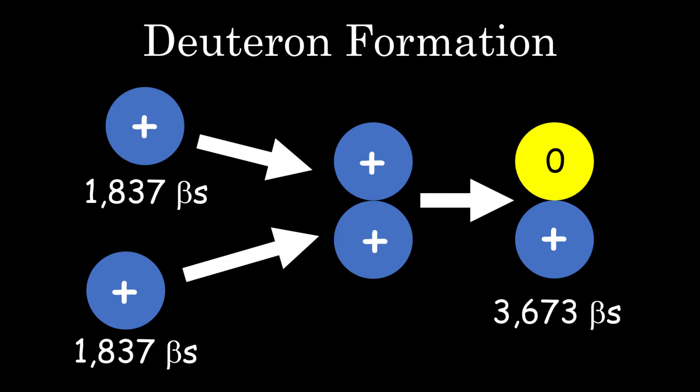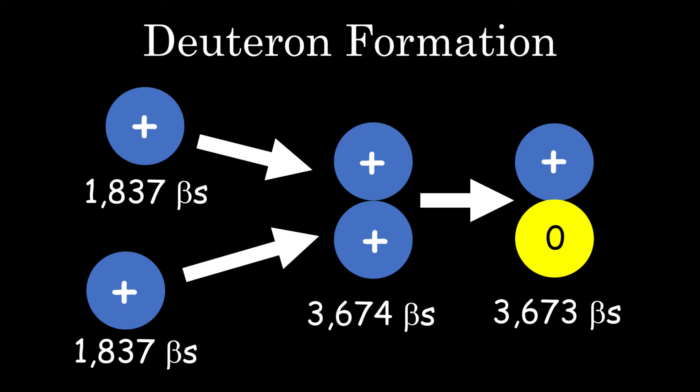Since the starting two protons, each having a plus one charge and containing 1,837 beta particles — 919 beta positrons and 918 beta electrons — together contain 3,674 beta particles and a plus two charge, one beta particle, a beta positron, is lost in forming the plus one charged deuteron, apparently as part of the free positron emitted during formation. This causes the two nucleons to have to share a beta positron between them, to each have 919 beta positrons to feel like a proton, binding them together.